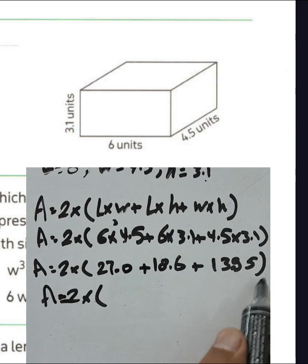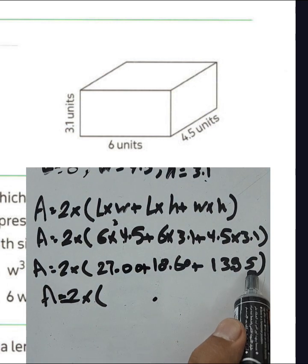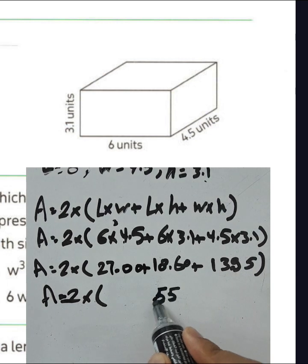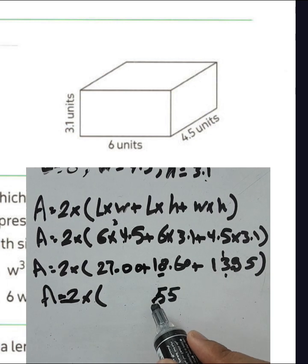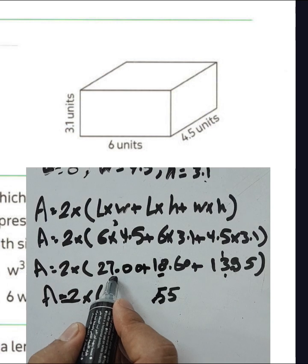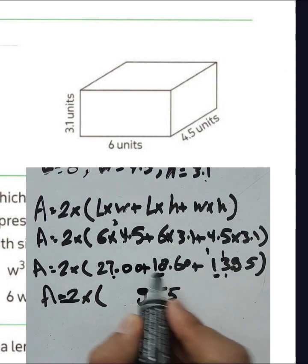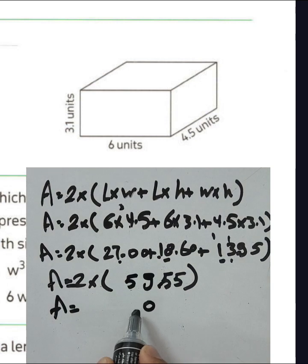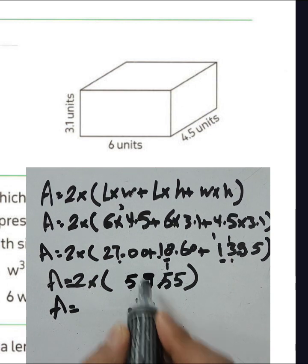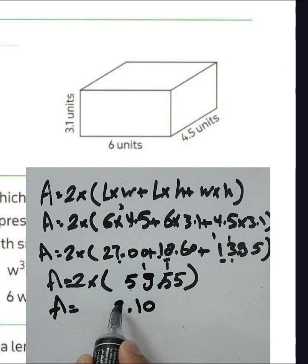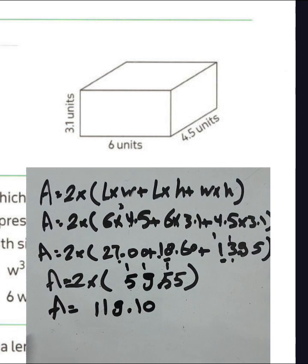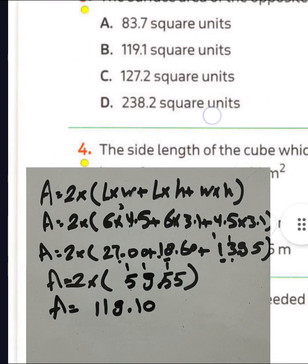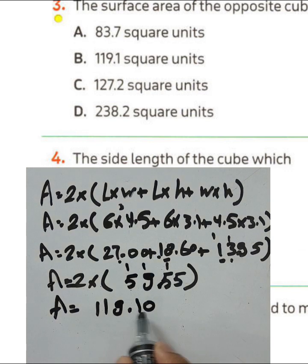Summing 27.0 + 18.6 + 13.95: aligning decimal places, 5+0+0=5, 9+6=15 carry 1, 3+1=4, 4+8=12 carry 1, 12+7=19 carry 1, bringing it together gives 59.55. Then 2 times 59.55 equals 119.1 square units. Choose letter B.